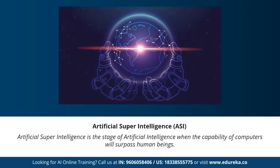Stephen Hawking quoted that the development of full artificial intelligence could spell the end of the human race. Moving on to artificial super intelligence — this is the stage where the capability of computers will surpass human beings. It is currently seen as a hypothetical situation, as depicted in movies and science fiction. Such systems don't currently exist; we have no machine capable of thinking or reasoning better than a human.